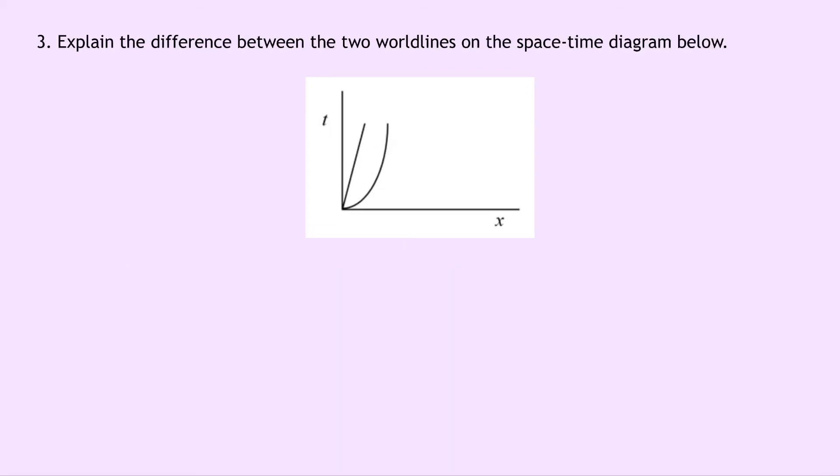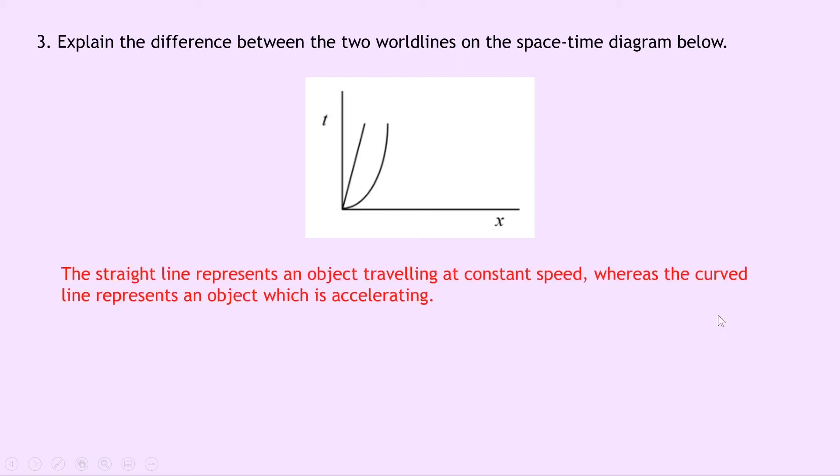Lastly question three says to explain the difference between the two worldlines on the space-time diagram below. So again just like in questions one and two we've got our time axis and our space axis of x. And we've got a straight line here and a curved line here. So we can say that the straight line represents an object traveling at constant speed. Whereas the curved line represents an object which is accelerating. So remember straight lines are used for objects that are stationary or moving at constant speed. Whereas the curved lines will always be an object which is accelerating.